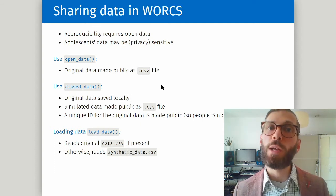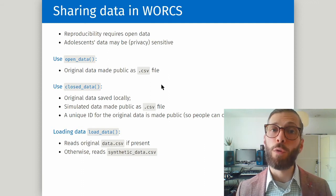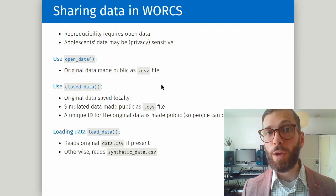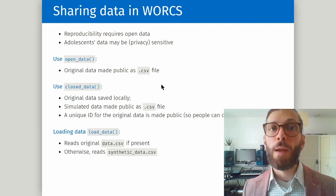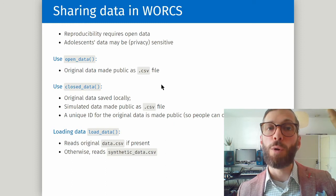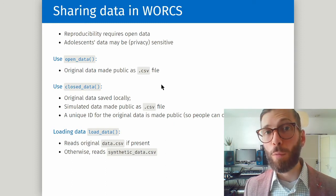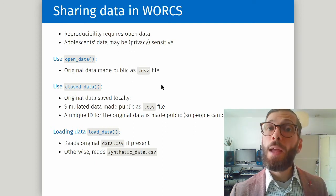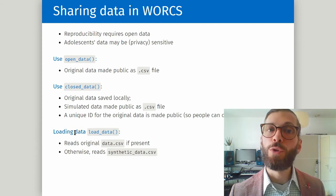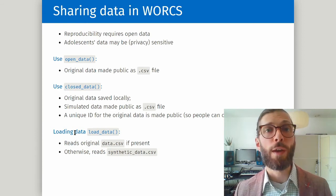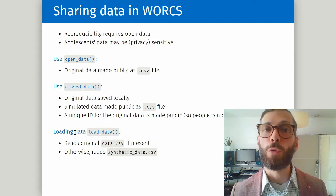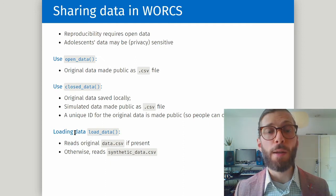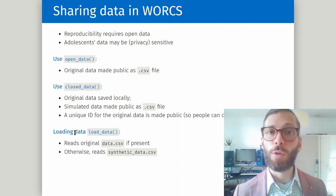We also create a unique identifying number for the original data and make that publicly available. That means that if anyone has questions about the reproducibility of your results, they can check whether the identity number on the internet matches the identity number on your personal computer and demonstrate that your analysis reproduces. When you want to load the data you use the function load_data, and if the original data are available it will load those; if not, it will load the synthetic data. This way anybody can reproduce your analysis even without access to the original data.